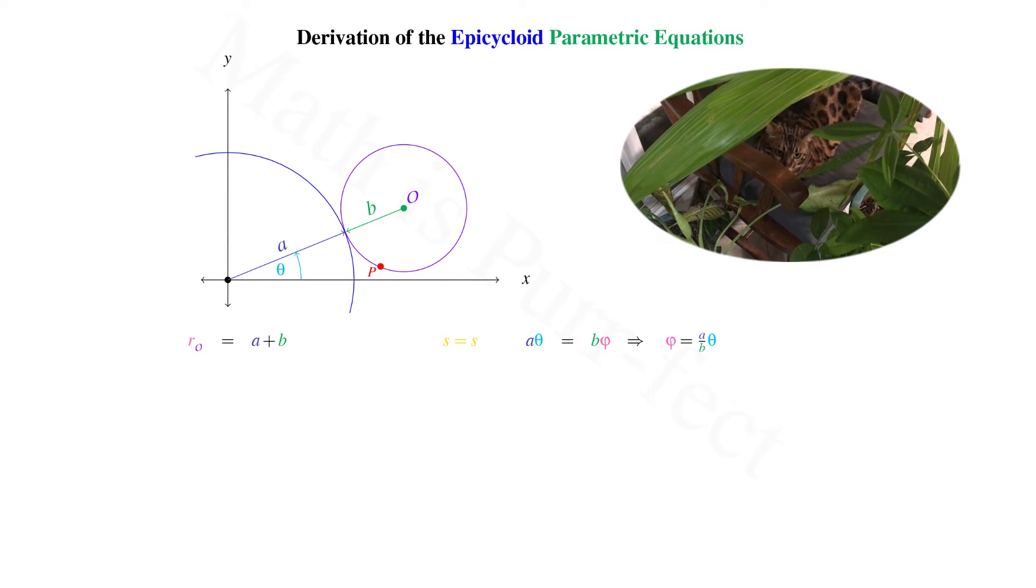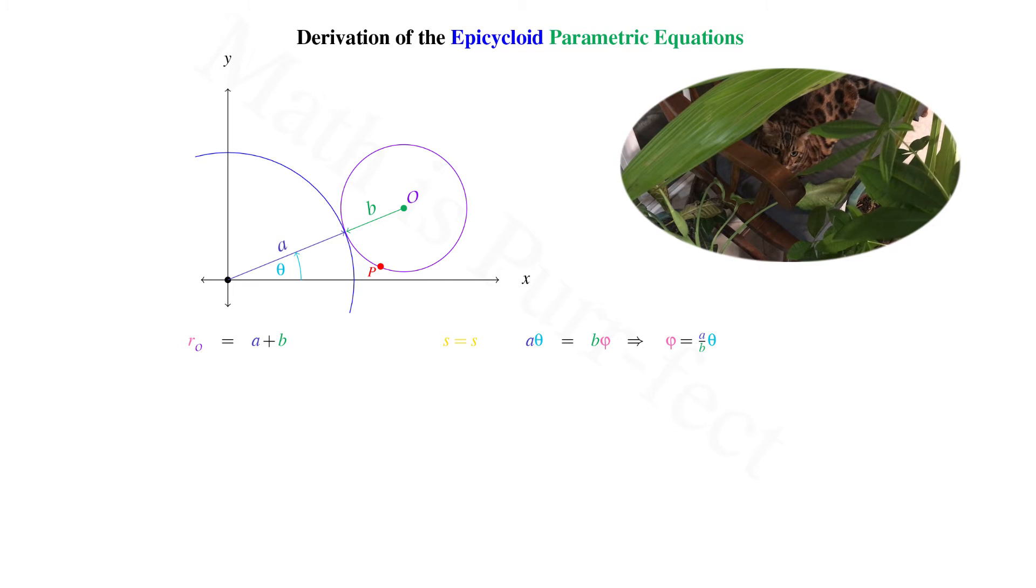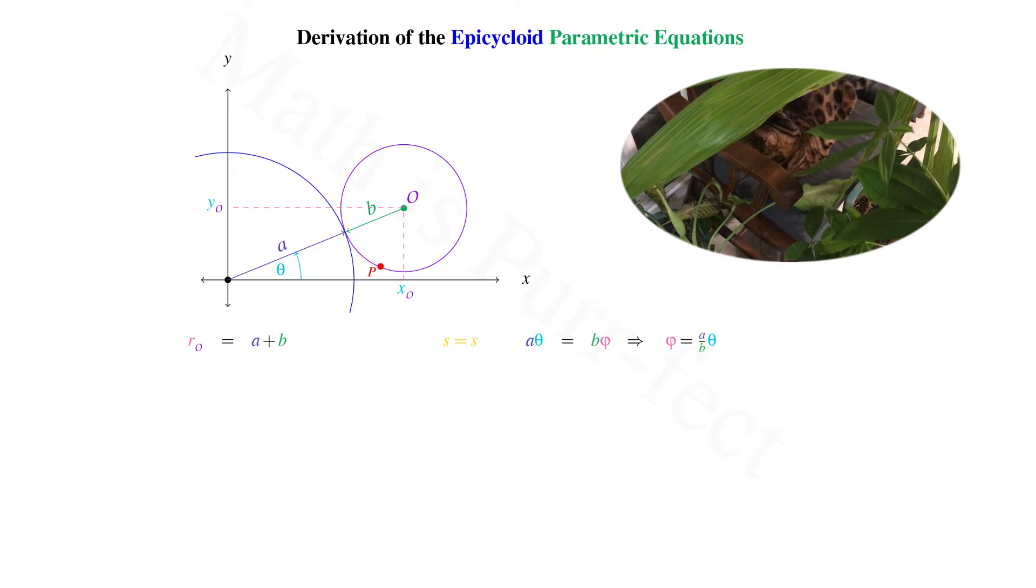Cleaning our image up a bit, let's find the coordinates of O. Call them X sub O and Y sub O.